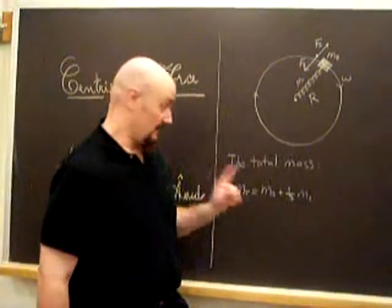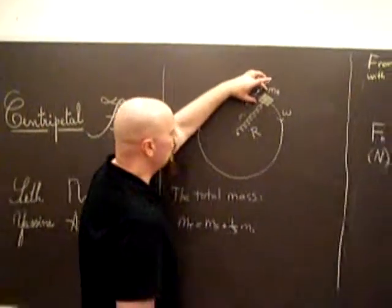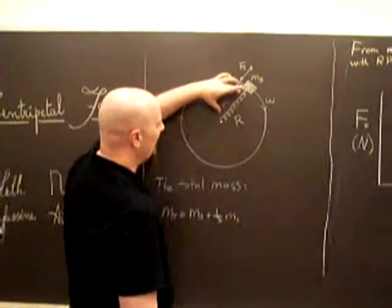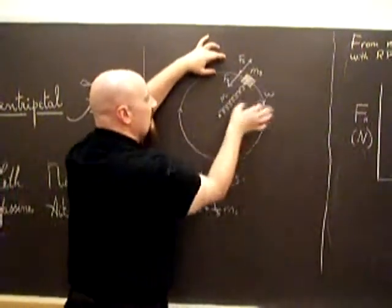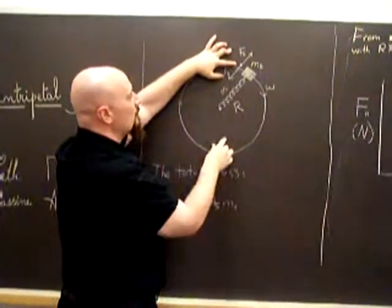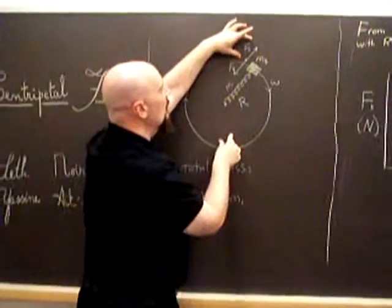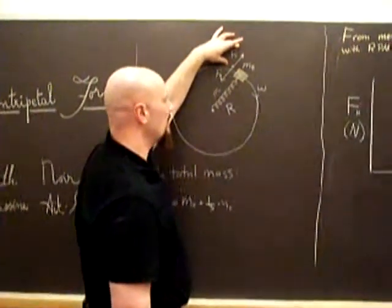So the experiment is the brass cylinder attached to the spring sends in circles. Now, it's not oscillating at the end of this. So the restoring force of the spring will be equal and opposite to the centripetal force that we're providing with the spin.